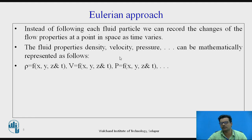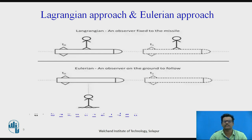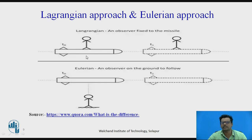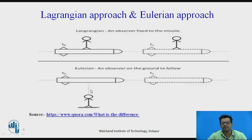Now we will discuss these approaches with an example. In the Lagrangian approach, if you want to study the movement of a missile, an observer is fixed to the missile and moves along with it, noting down whatever speed or parameter is of interest. Whereas in the Eulerian approach, the observer stays at a fixed location and observes the missile as it moves forward. That is the basic difference between the Lagrangian and Eulerian approach.